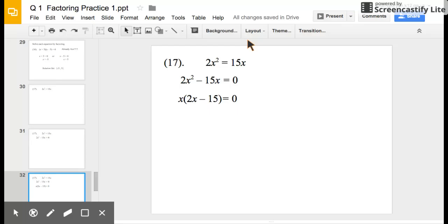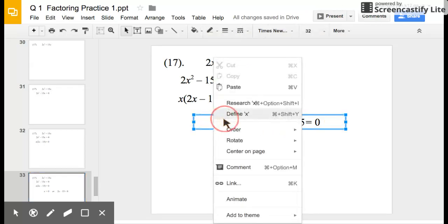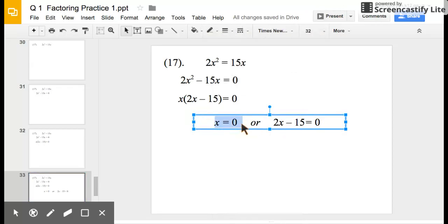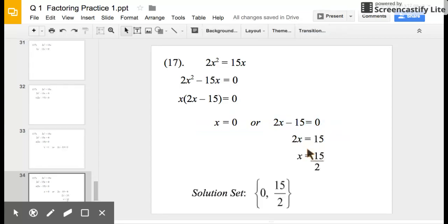So I can separate these two into two different factors and set them equal to zero. So I have x equals zero, or it could be 2x minus 15 equals zero. So from that point, one of these equations is already solved here. So all I have to do is solve 2x minus 15 equals zero. So I'm going to add 15 to both sides, and I'm going to divide by 2, so I get 15 over 2. So my solution set, where this graph is going to cross the x-axis, is 15 over 2, which is about 7 and a half.